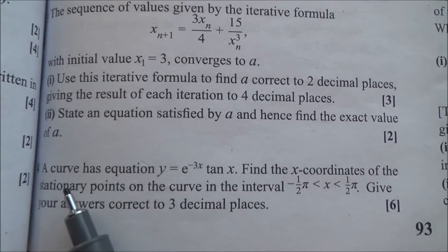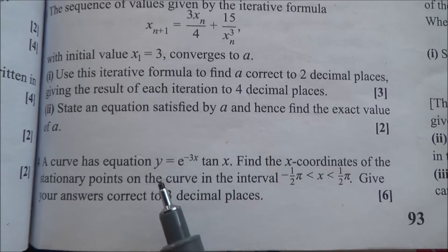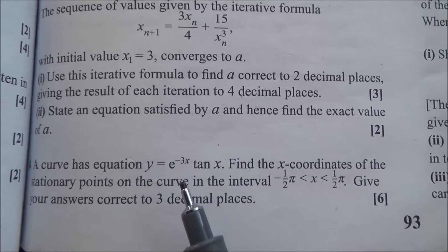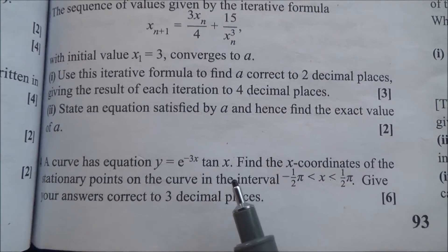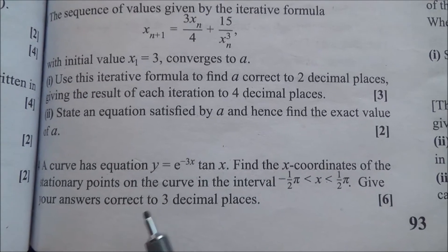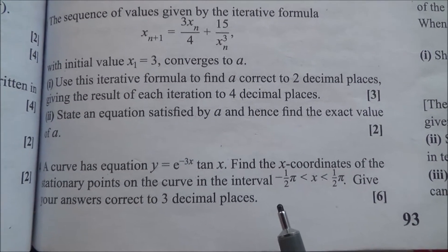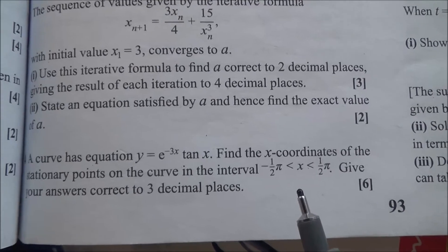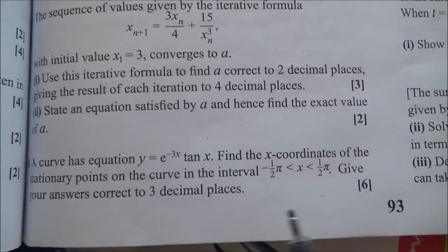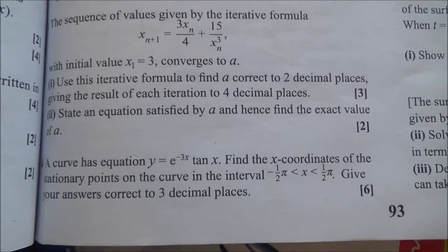Hi, question number 4. A curve has equation y equals e to the power of minus 3x tan x. Find the x coordinates of the stationary point on the curve in the interval minus half pi less than half pi. Give your answers correct to three decimal places.